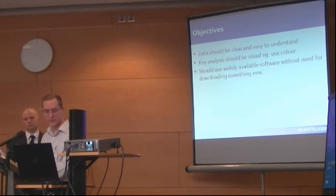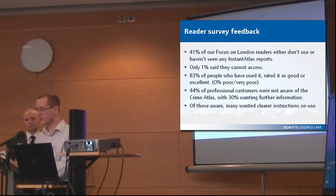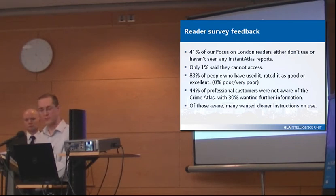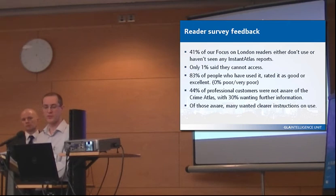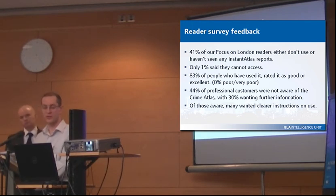We've had some feedback to our work on this. Our main flagship publication is called Focus on London, and it comes out every couple of months. It's a thematic report covering different topics like population, housing, poverty, and skills. These regular reports normally have an InstantAtlas report with them. When we did our survey back in June, we got 115 responses. We found that 41% of our users didn't use or hadn't seen InstantAtlas — a bit higher than we would have liked. But only 1% said they couldn't access it, which was much lower than we thought. Those who did use it were very positive — 83% said it was either excellent or good, and nobody said it was poor or very poor.